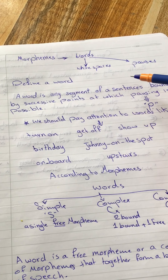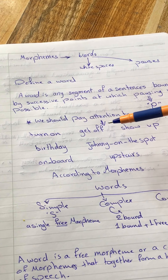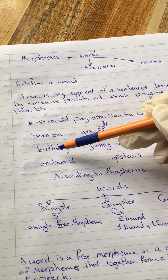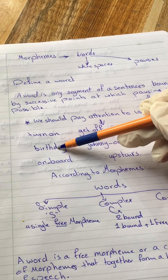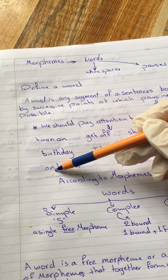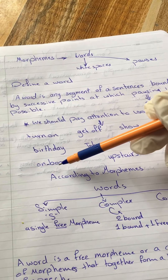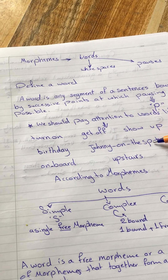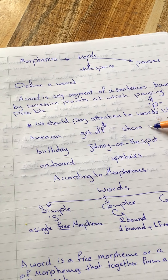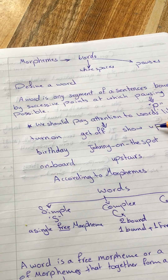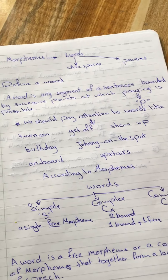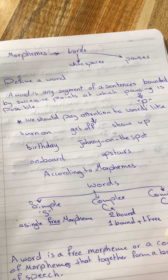According to Stagerberg, there are three types of compound words: compound words written as one with no space between them, hyphenated compound words with a hyphen — like 'johnny-on-the-spot' — and two words with a space between them. Note: this is only for your information and is not included in any exam.